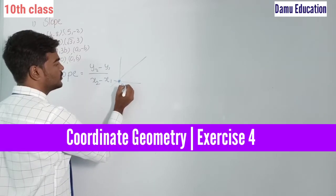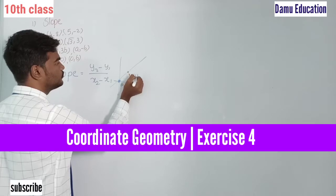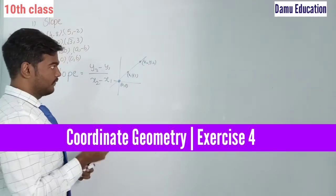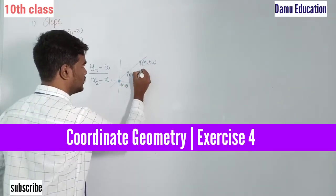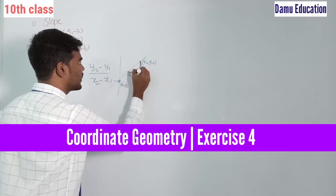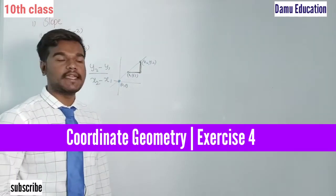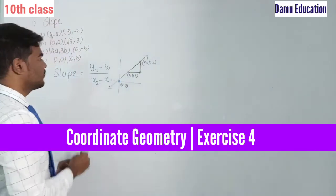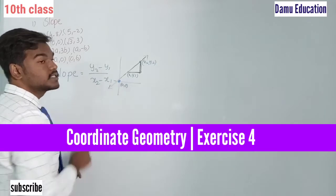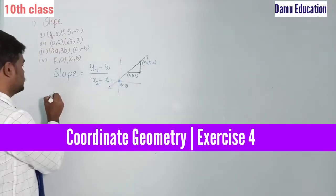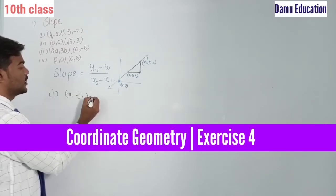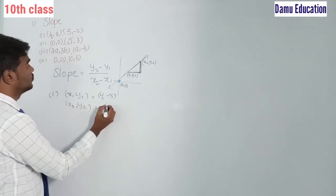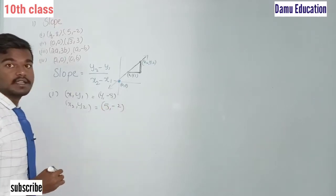Let's take the first example. Here x1, y1 = (4, -8) and x2, y2 = (5, -2). We will apply the slope formula: slope = (y2 - y1) / (x2 - x1).